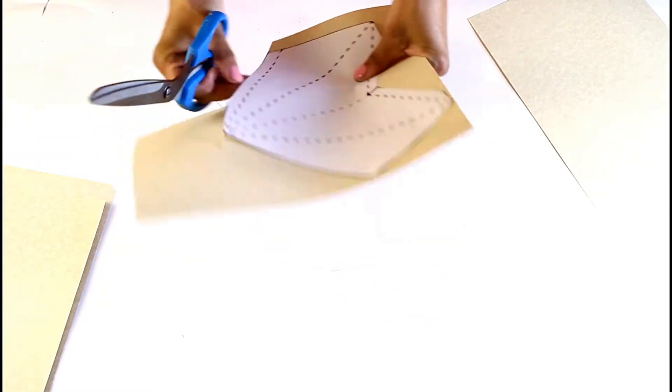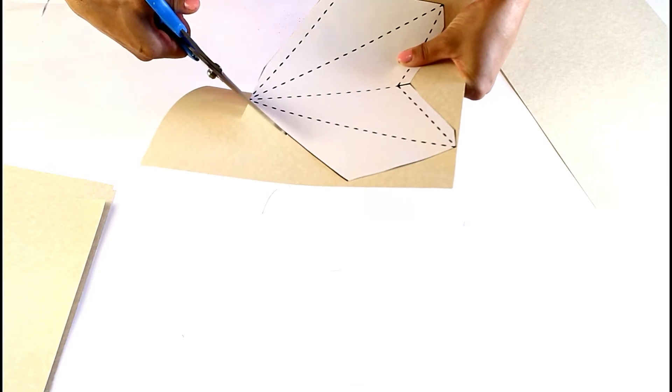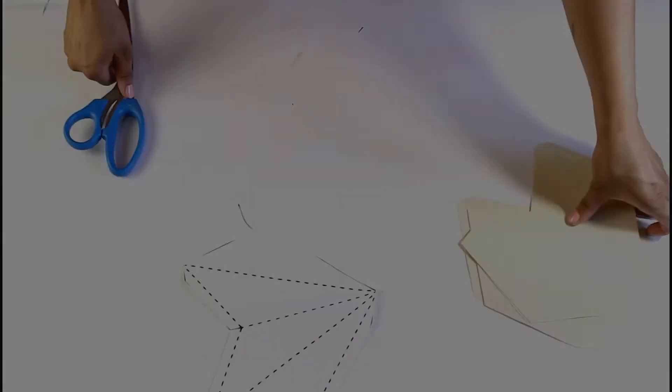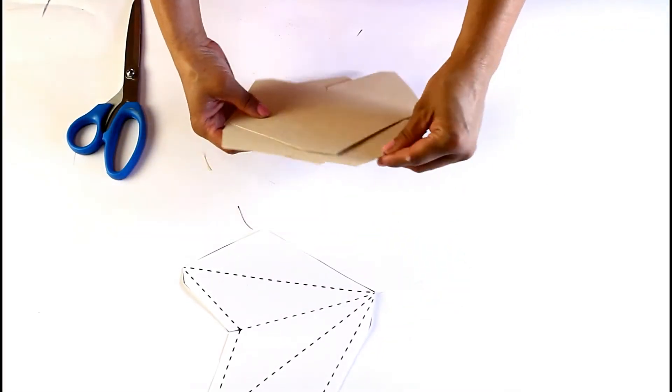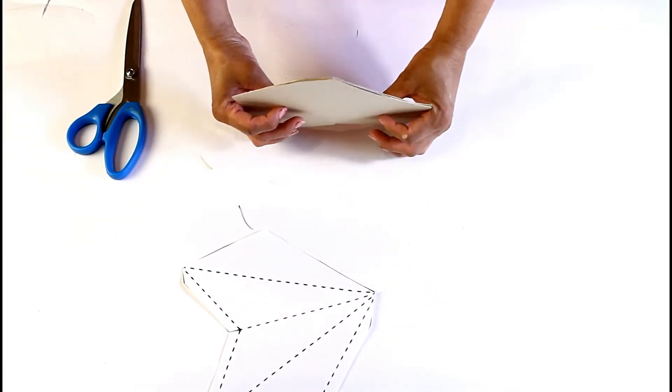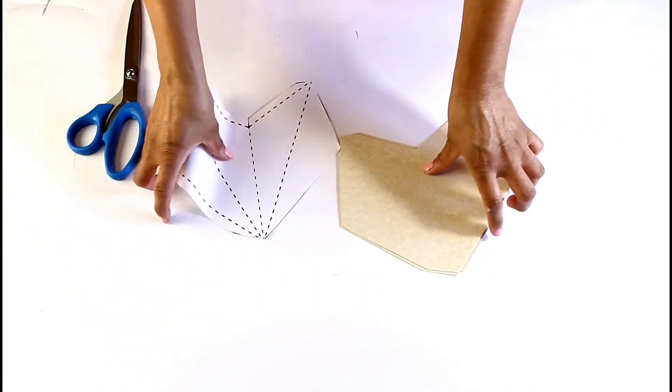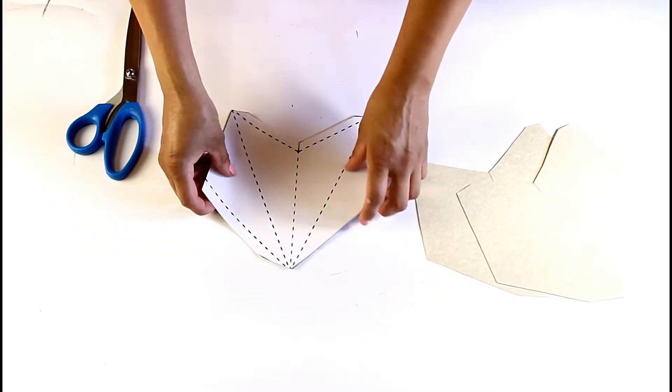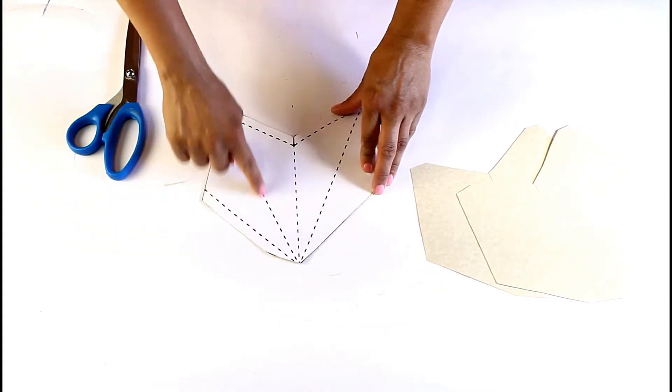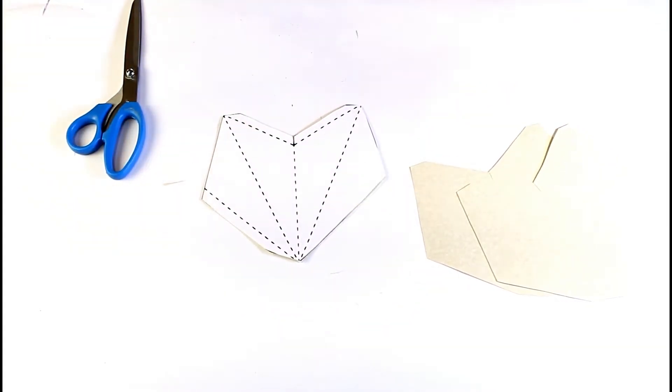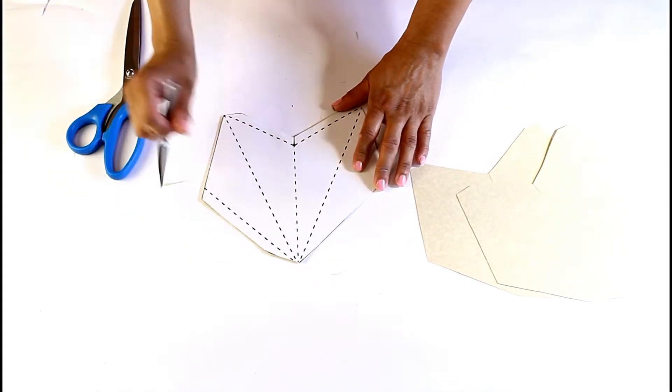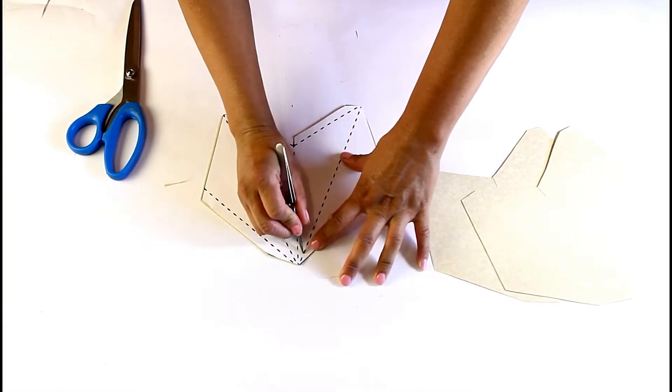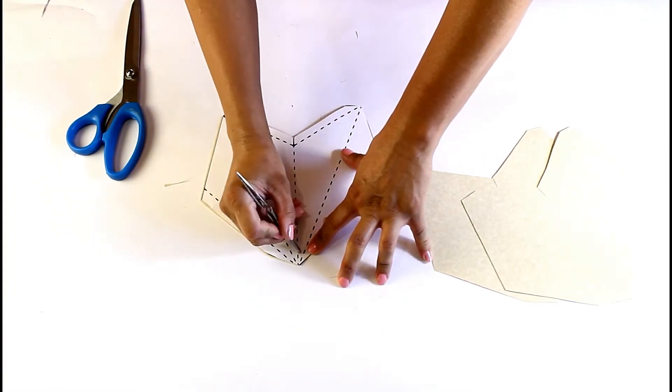Now that I have all five cuts, I'm going to use this to score my dotted lines. I have these types of tools, but you can use a spoon or really anything to score, like I did with my rosettes.